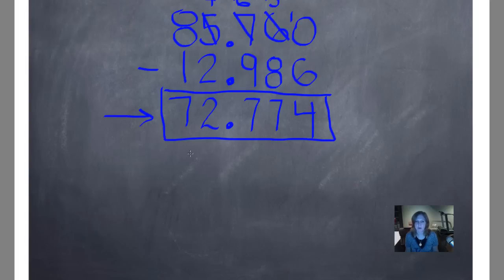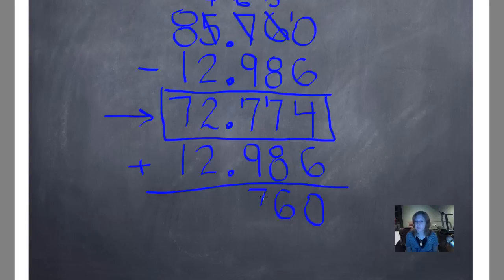Now we're going to write this bottom number right underneath there. And use our opposite operation of addition to check it. 4 plus 6 is 10. Carry my 1. 7 plus 1 is 8 and 8 are 16. 7 plus 1 is 8 and 9 are 17. Carrying right across that decimal. 1 plus 2 is 3 and 2 are 5. And 7 plus 1 is 8. Go back and make sure I fill my decimal in. Is my answer the same? Yes, it is. So there is my checking answer. And 72 and 774 thousandths is my final answer.